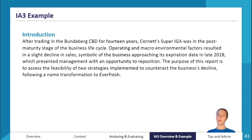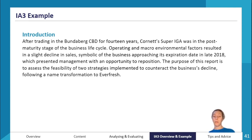In the introduction, state what the factors are — operating and macro — and what they caused: in this case, a slight decline in sales around late 2018. Introduce repositioning as the strategy being examined, and outline the purpose of the report: assessing the feasibility of two strategies implemented to counteract the business's decline following a name transformation to Everfresh. Cover how old the business is, what date this is happening, what's causing the decline, and what the report will be about.